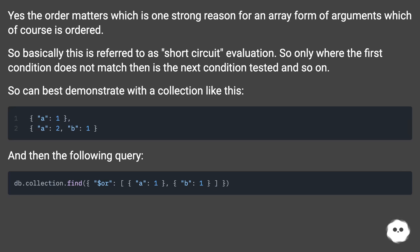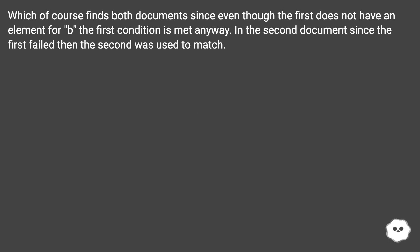This can best be demonstrated with a collection like this, and then the following query. It finds both documents, since even though the first document does not have an element for it, the first condition is met anyway. In the second document, since the first condition failed, the second was used to match.